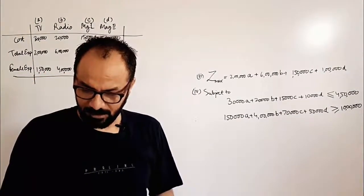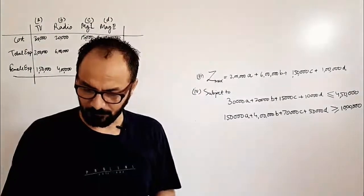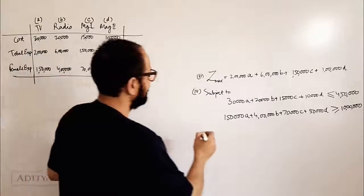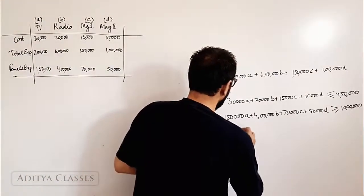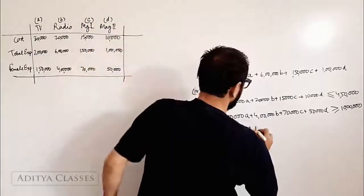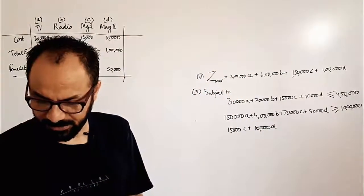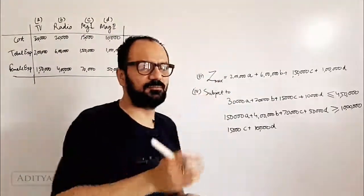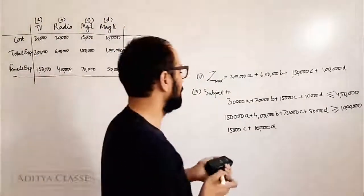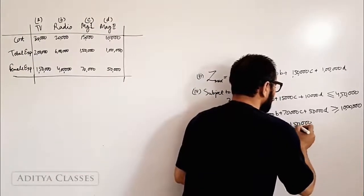Then there is the constraint that advertising on magazines must be limited to 1.5 lakhs. What am I spending on magazines? It is 15,000 on magazine one times C units, plus 10,000 on magazine two times D units. This should be restricted to 1.5 lakhs, so 15,000C plus 10,000D should be less than or equal to 1,50,000.